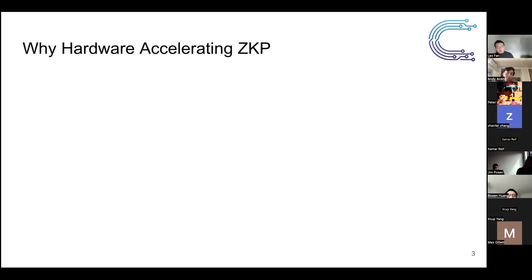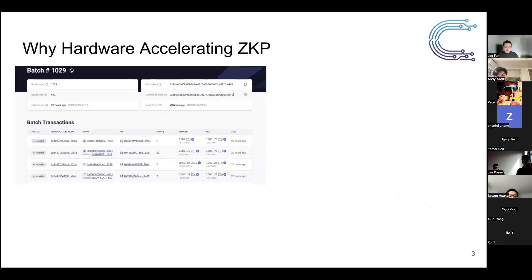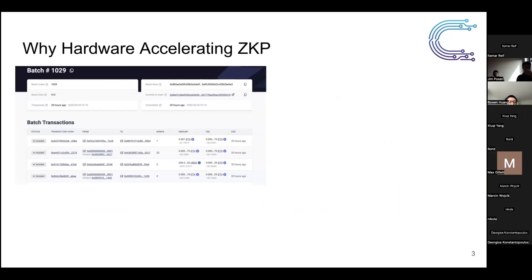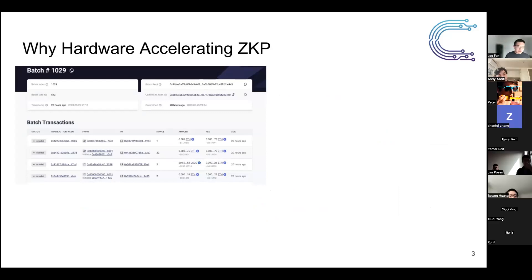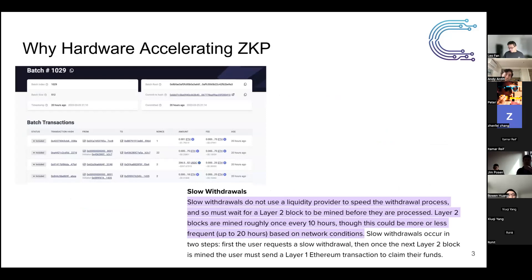Why do we need hardware acceleration? Just running CPU or GPU to generate ZK proofs is too slow. Here is a screenshot of what happens on ZK Sync — there is a 20-hour delay for transactions, which is not acceptable. Also, dYdX, a DeFi platform previously on StarkNet, experienced around a 10-hour delay due to slow performance and eventually migrated to Cosmos. That's why we need hardware acceleration to make ZK proof generation much faster.